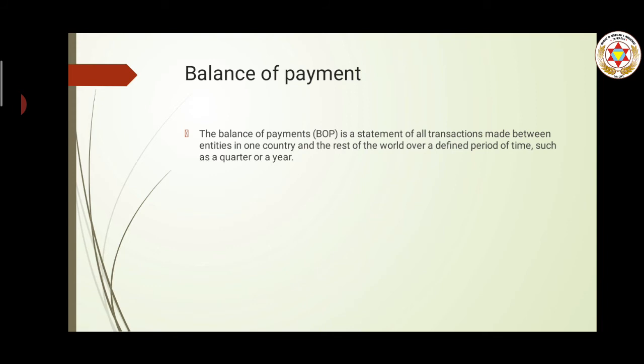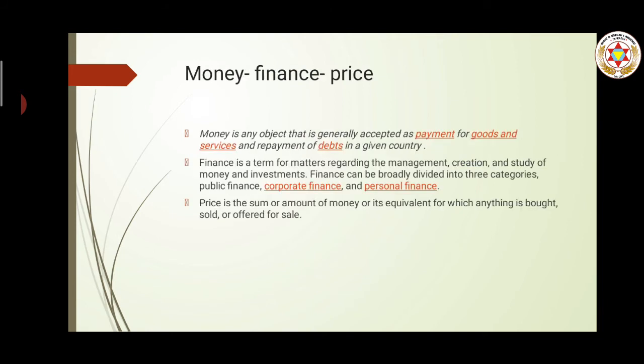Balance of payment tells us whether we have a positive or negative balance. It usually records transactions related to trade activities like import and export of goods and services between our country and the rest of the world. It also records financial investments like foreign direct investment, foreign institutional investment, and portfolio investments such as stock market investments, as well as the foreign exchange reserves of the country.